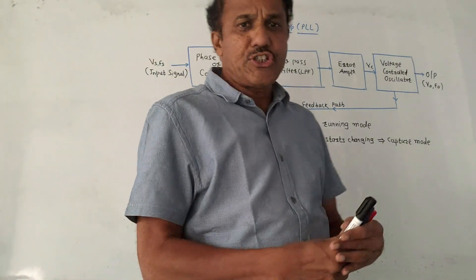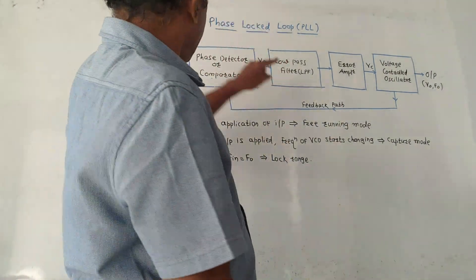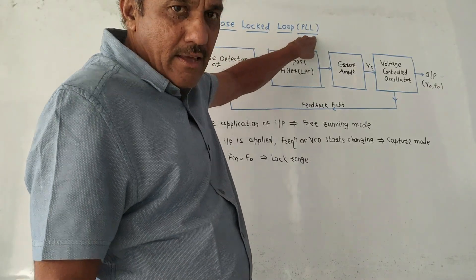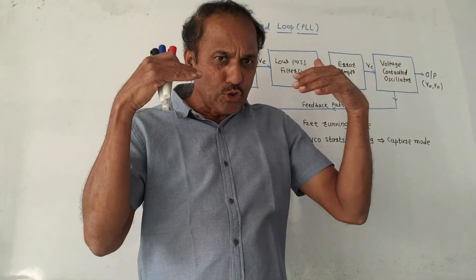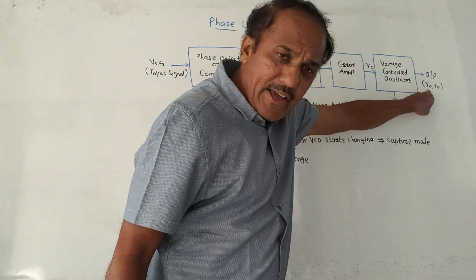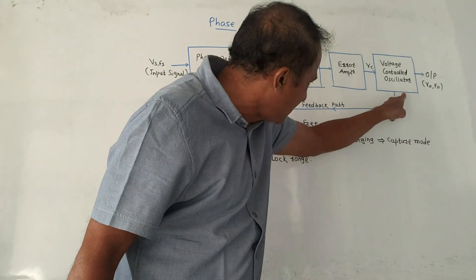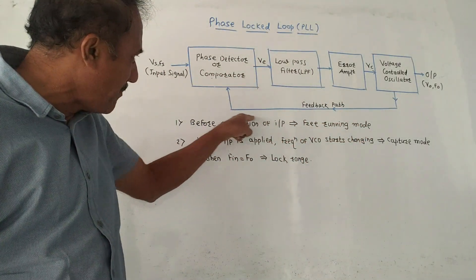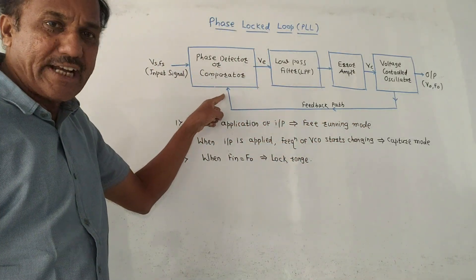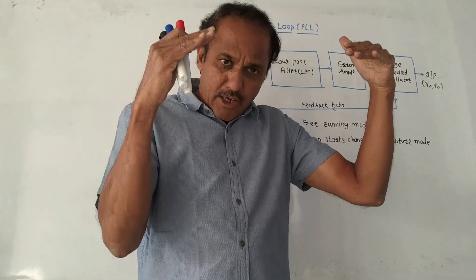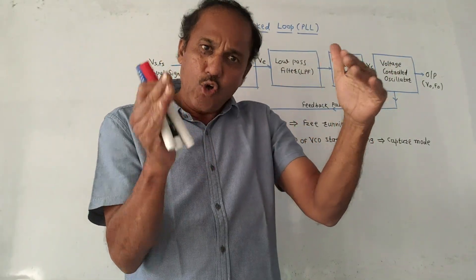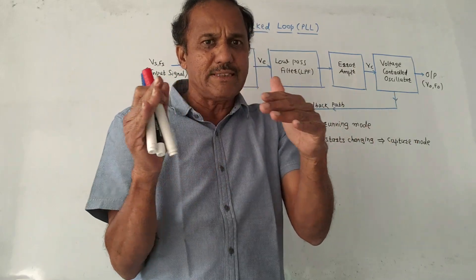Hello and welcome back to this channel. Dear students, this topic is phase locked loop, that is PLL. It is basically a closed loop system because, looking at the diagram, the output signal — denoted V0 — is fed back along the feedback path to the input side. So it is a closed loop system in which input frequency and phase are locked with output frequency and phase.